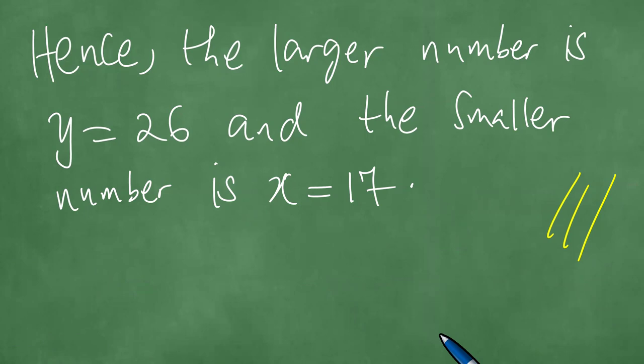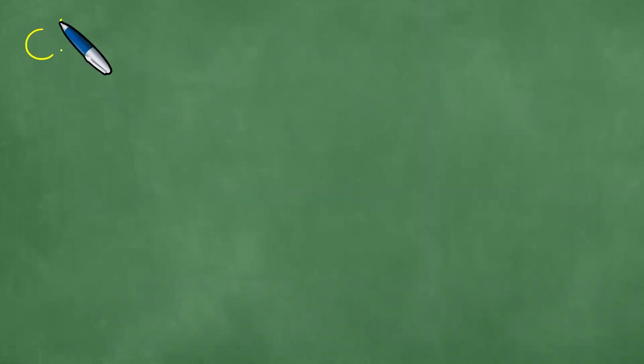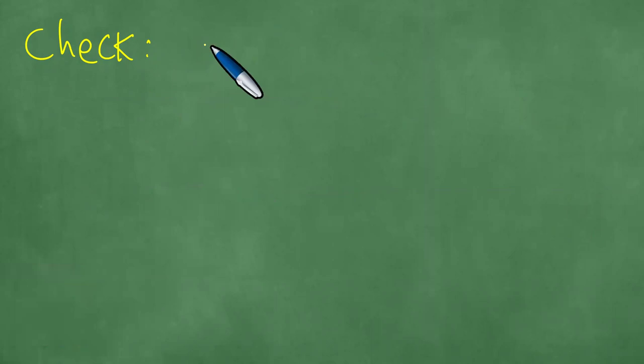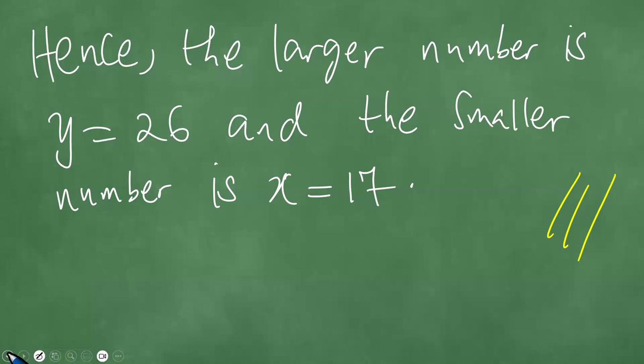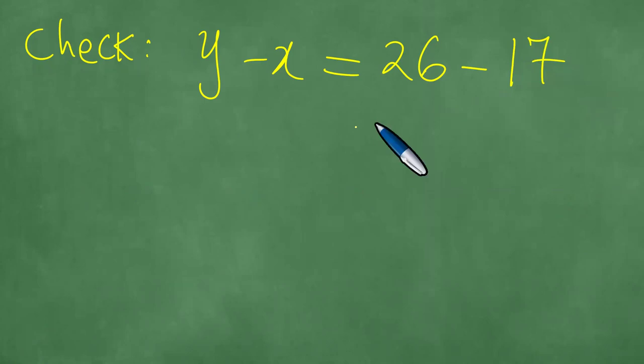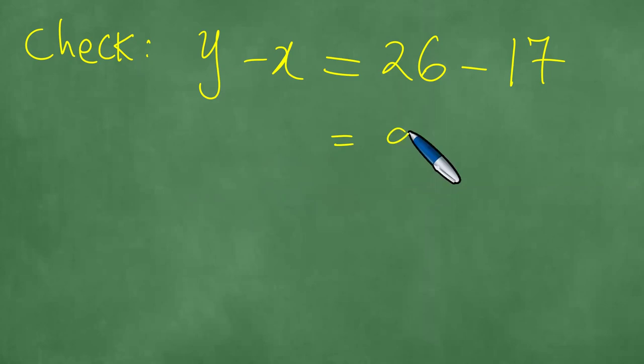We proceed to check these results. Let us find the difference. We take the larger minus the smaller, because the difference is given as positive: 26 minus 17. When you perform this difference, you get exactly nine. The difference is correct.